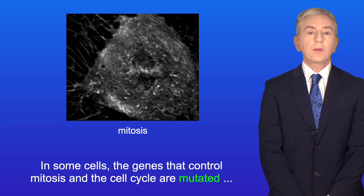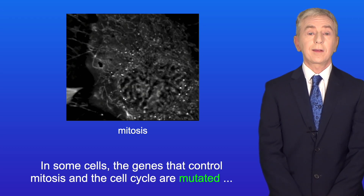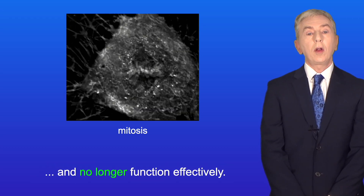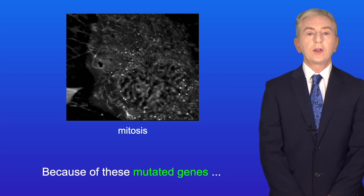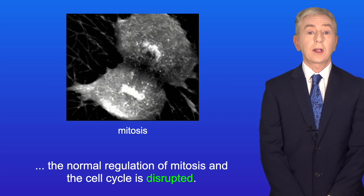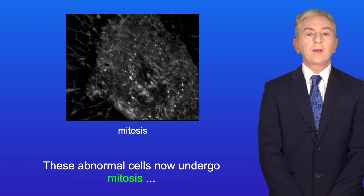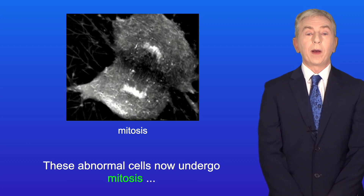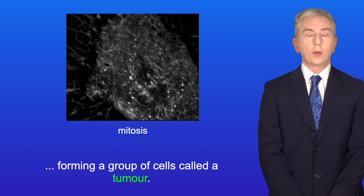In some cells the genes that control mitosis and the cell cycle are mutated and no longer function effectively. Because of these mutated genes the normal regulation of mitosis and the cell cycle is disrupted. These abnormal cells now undergo mitosis, forming a group of cells called a tumour.